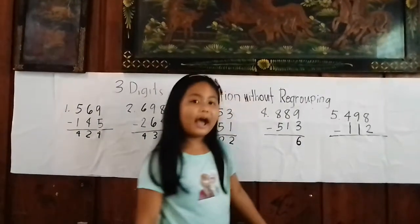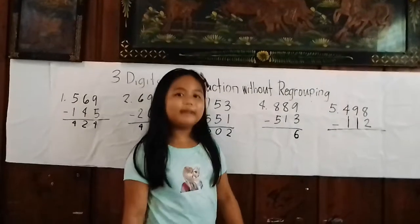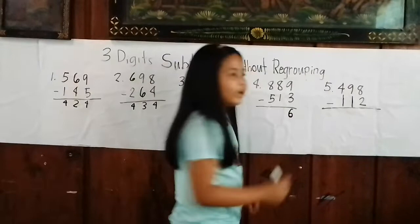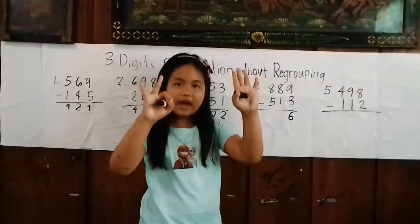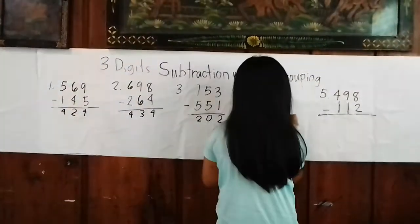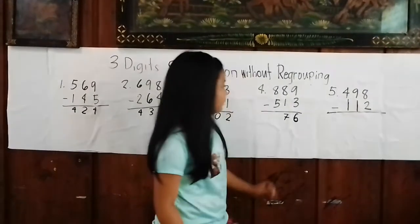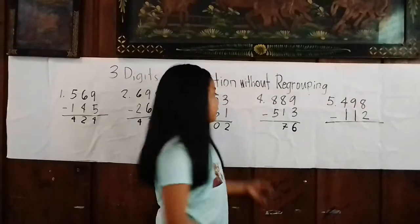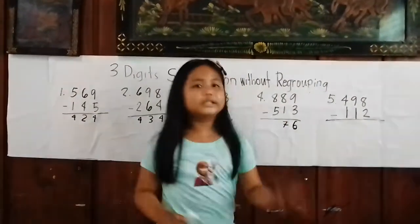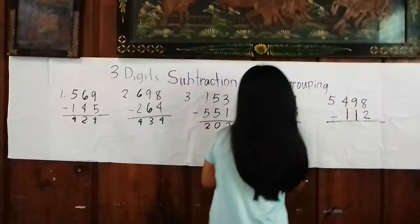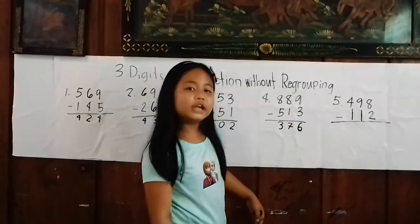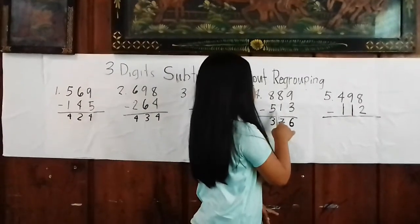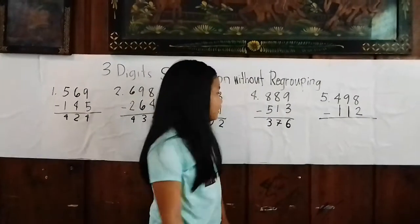Now we will subtract the tens place. 8 minus 1 equals 7. Now we will subtract the hundreds. 8 minus 5 equals 3. So the answer of 889 minus 513 equals 376.